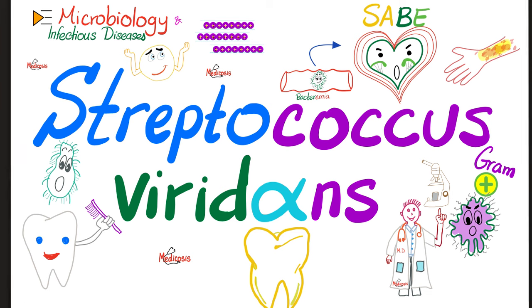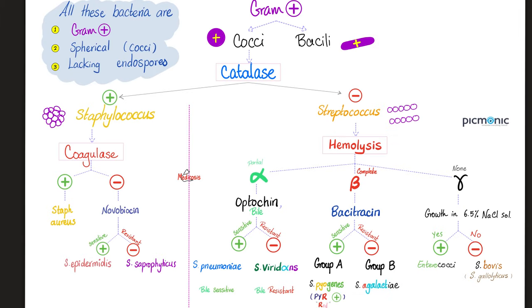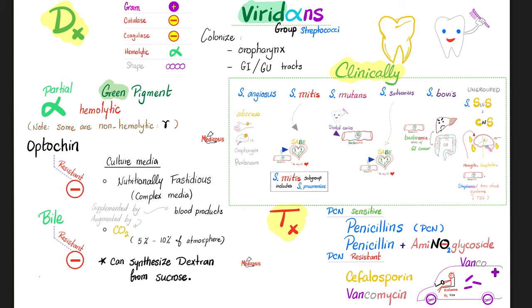Coming up next: Streptococcus viridans. Virid means green because it's alpha hemolytic — partial hemolysis — and shows a green color on blood agar. Gram-positive coccus. Catalase negative. Alpha hemolytic with green pigment — that's why we call it virid. Optochin resistant and bile resistant. When it comes to culture, viridans is very picky — i.e., fastidious. It wants complex media, blood products, and carbon dioxide at 5-10%.